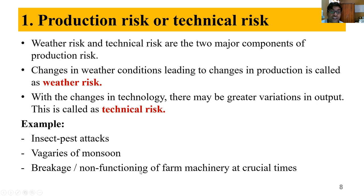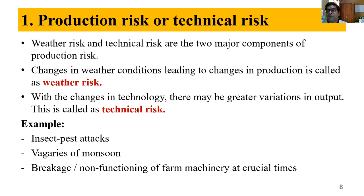Examples of production risk include insect pest attacks, monsoon vagaries, and non-functioning or breakage of farm machinery at crucial times. For instance, if the farmer rents a laser land leveler (LLL) from Punjab, pays transportation, and then the sensor is not working — that is a risk. But he still has to take it because if the land can be leveled properly, there is the possibility of higher returns. He can have some arrangement — perhaps paying only 50% if it doesn't work, or keeping laborers on standby.